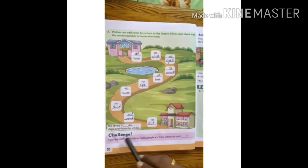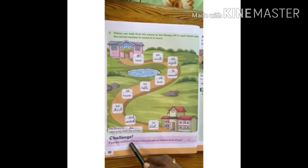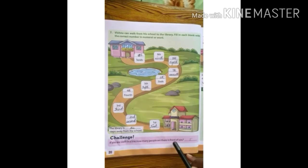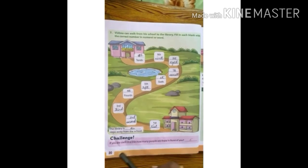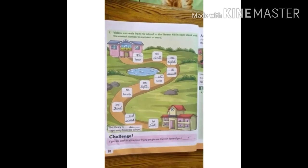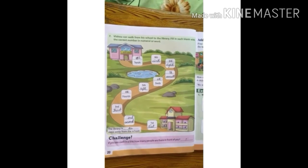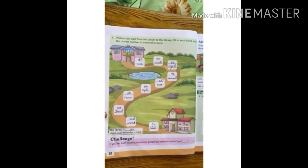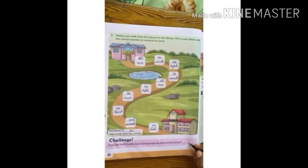Now, challenge: if you are sixth in a line, how many people are there in front of you? If you are in the sixth position, in front of you there will be five people. So we write here five.